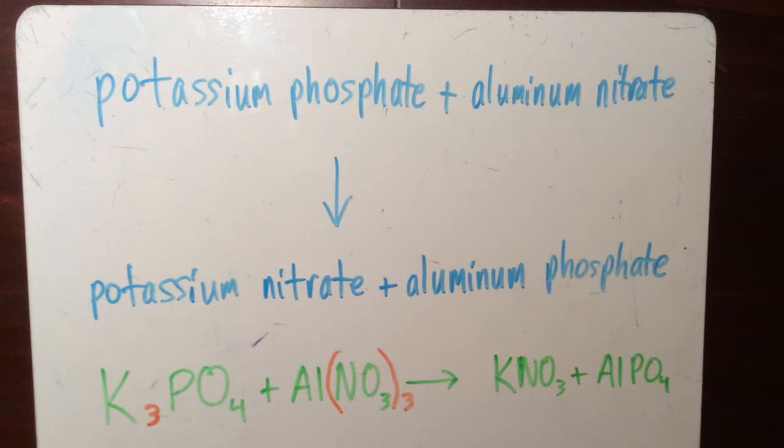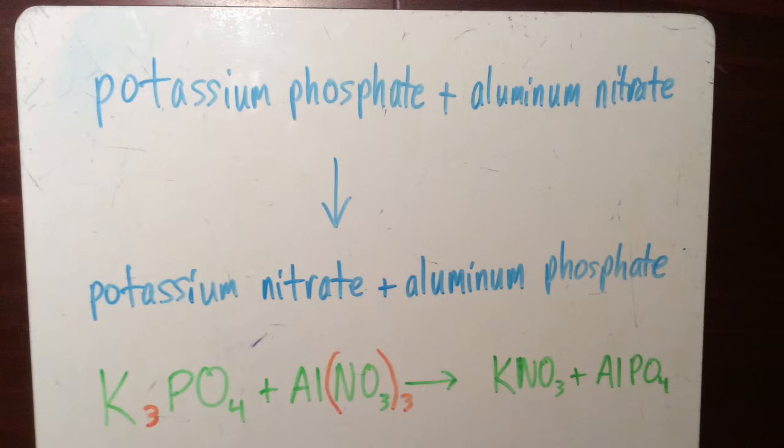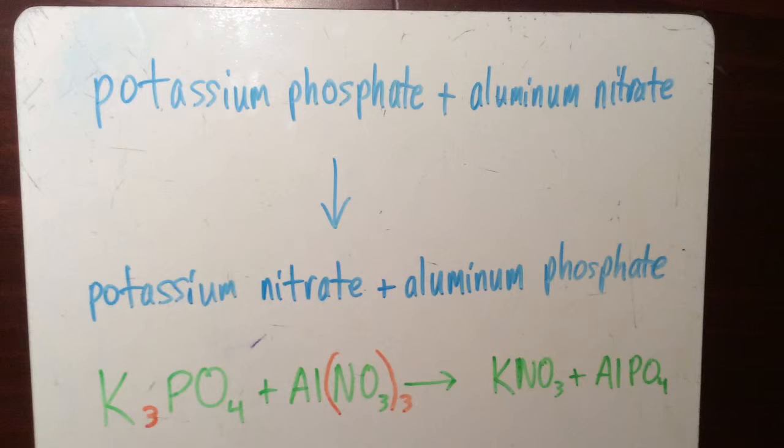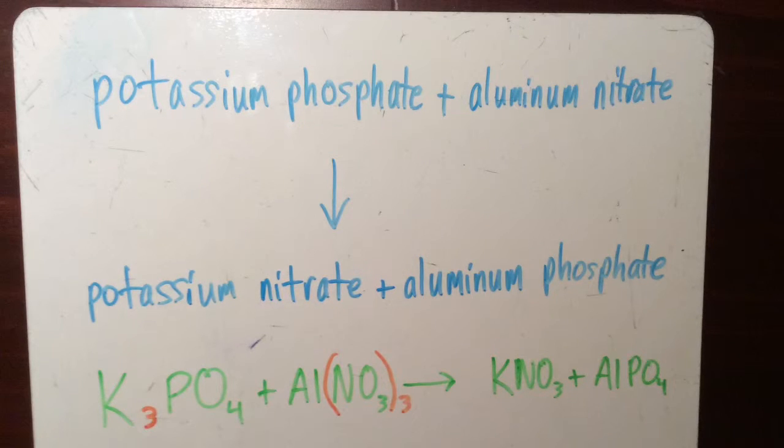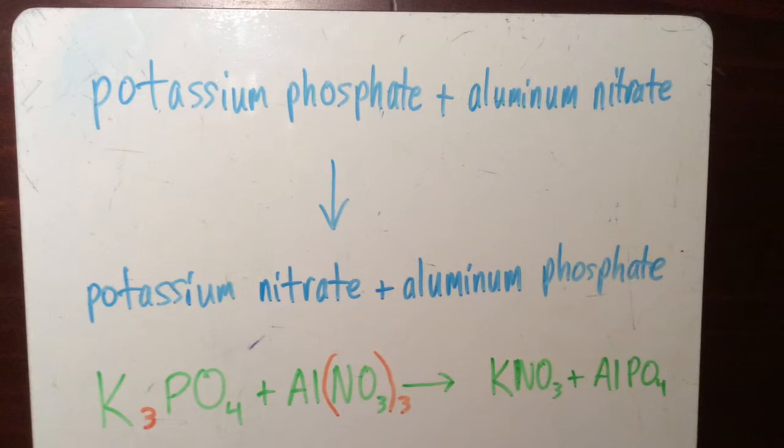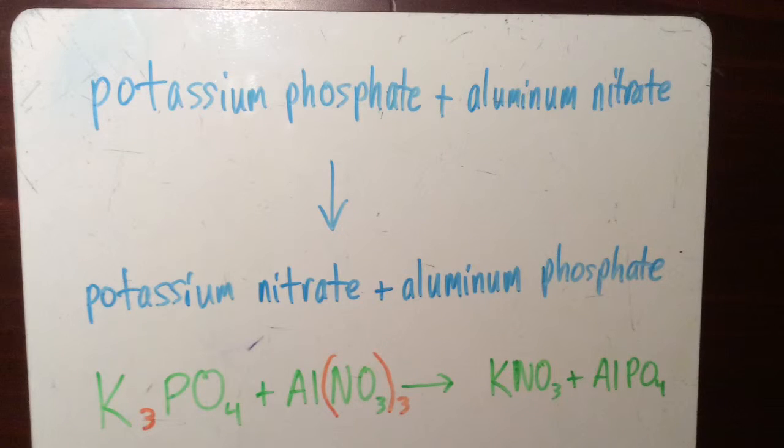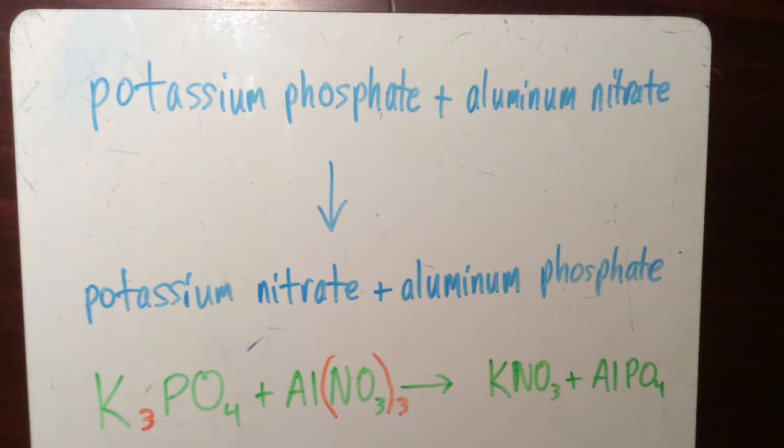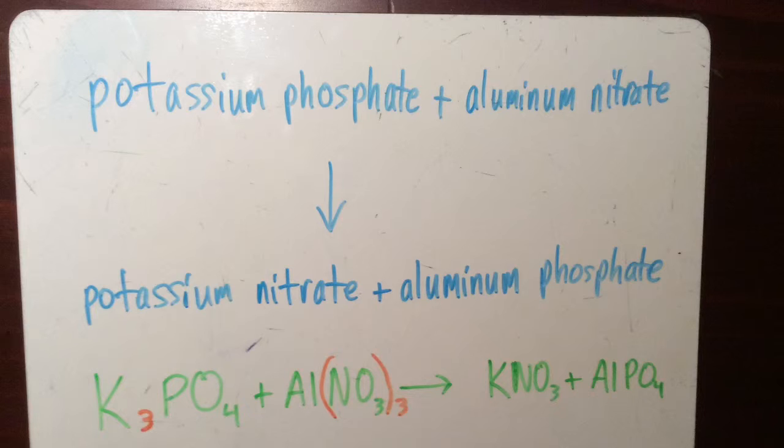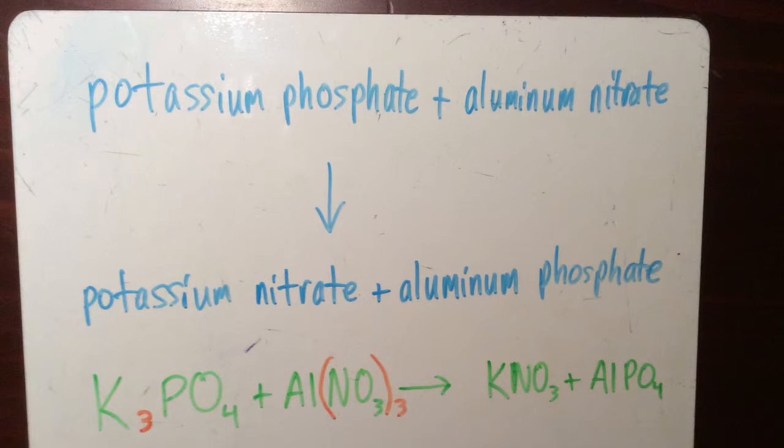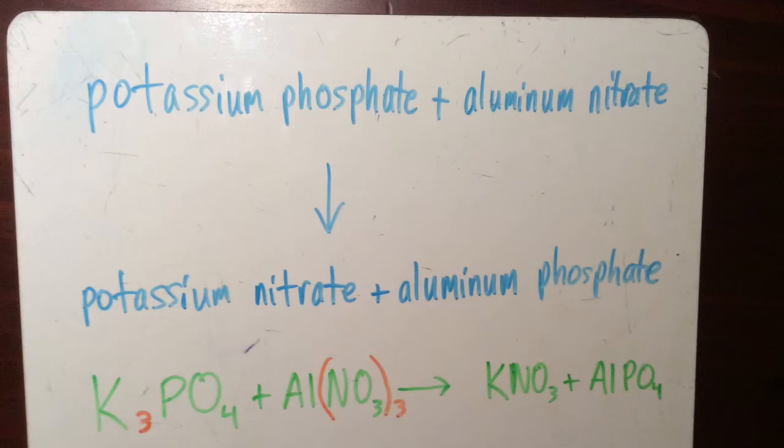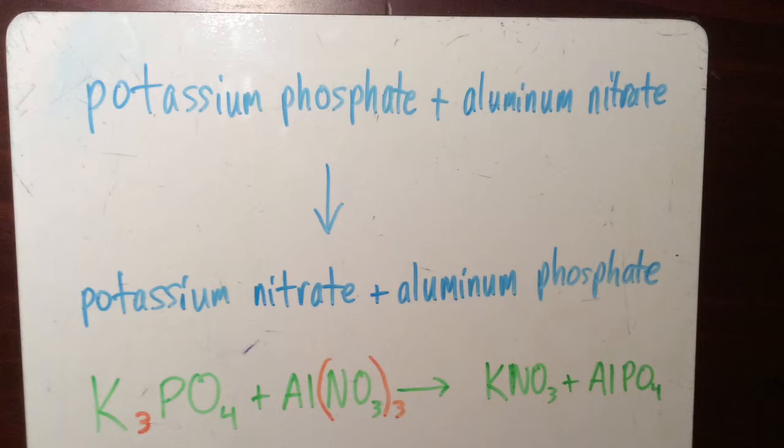Aluminum nitrate also needs to be balanced. Nitrate has a charge of minus 1 while aluminum has a positive 3 charge. To balance this molecule we need to have 3 nitrates so that we'll have a positive 3 charge in aluminum and a negative 3 charge with the 3 nitrates.